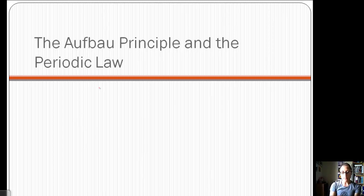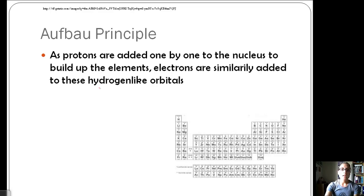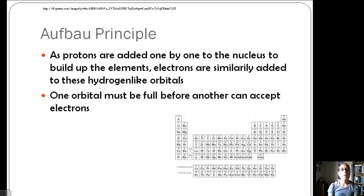Let's relate all of our quantum numbers to our periodic table. The Aufbau Principle says that as protons are added one by one to the nucleus to build up the elements, electrons also get added. One orbital must be full before another can accept electrons. When we talk about electron configuration and orbital filling, we must fill those lower energy orbitals first before we can go on to the next one.